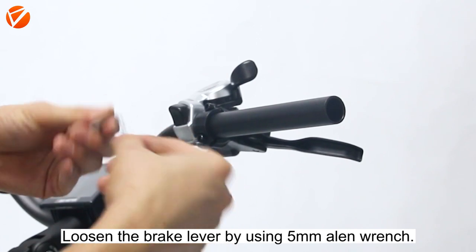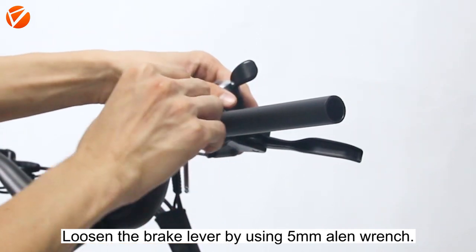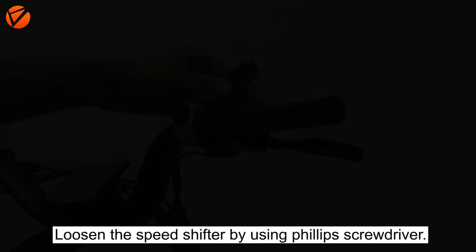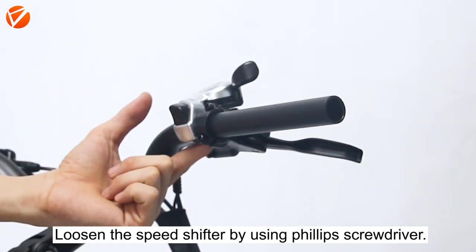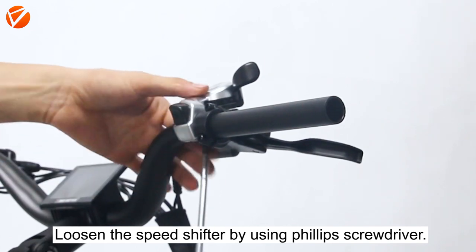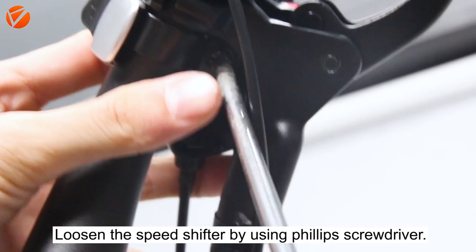Loosen the brake lever by using a 5mm Allen wrench. Loosen the speed shifter by using a Phillips screwdriver.